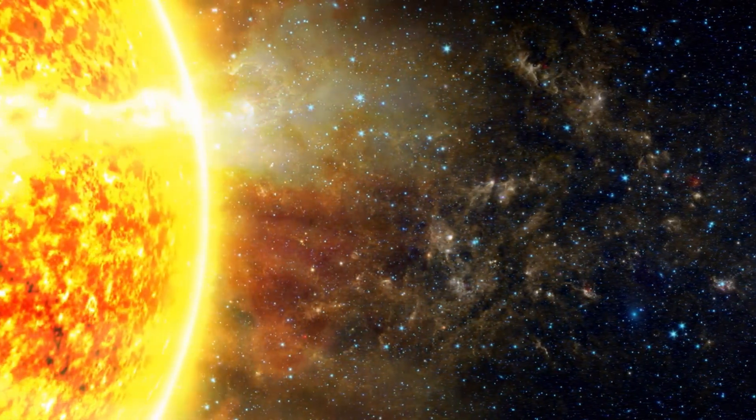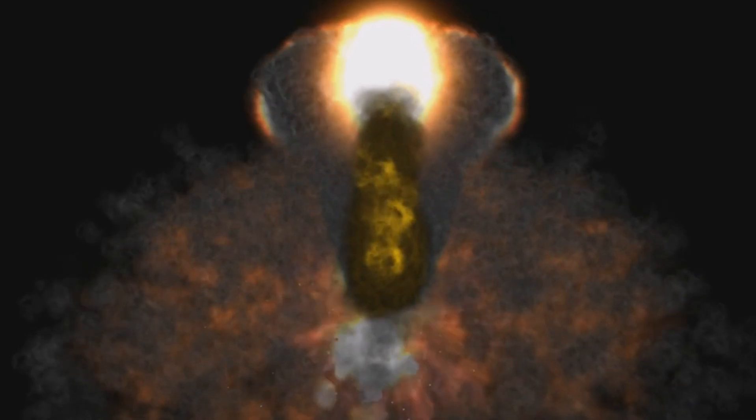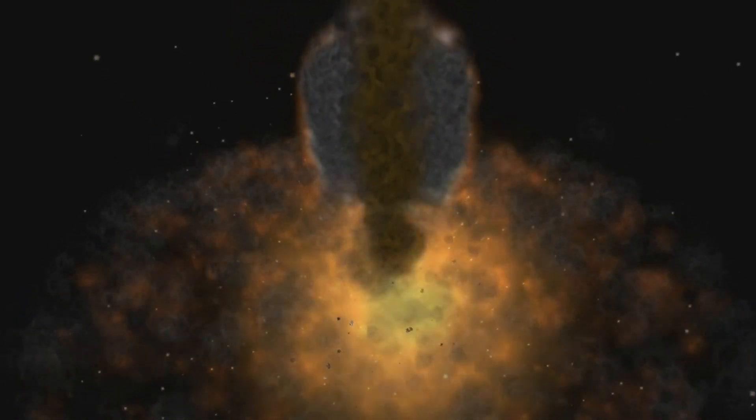Larger stars often burn through their hydrogen fuel more quickly, leading to their eventual demise, even if they are just roughly 10 million years old. Unquestionably, Betelgeuse is in its latter stages of existence. However, at over 5 billion years old, our sun is still going strong.